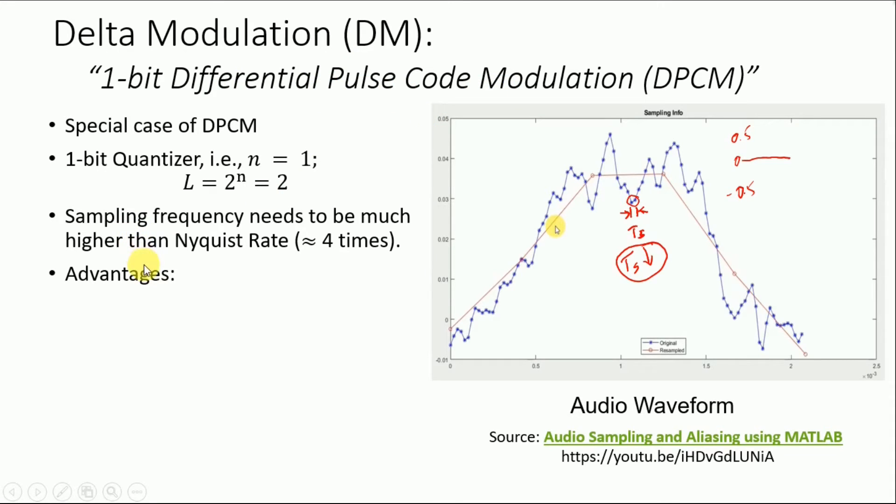Now there are several advantages of Delta modulation starting with the simplification of our model since we are using n equal to 1. So we have a very small number of quantization levels. So we have simple design and construction for Delta modulation as compared to the DPCM. The next major advantage is that we don't need frame synchronization that we previously needed for DPCM or for the PCM.